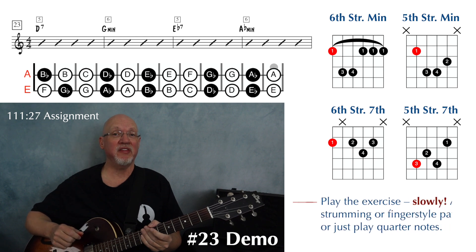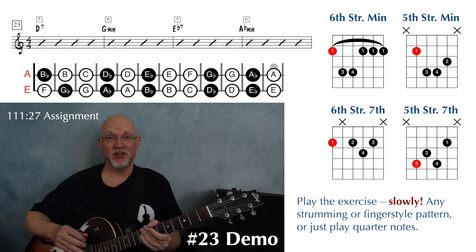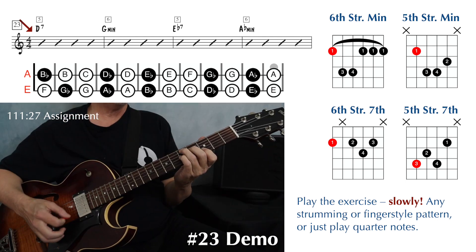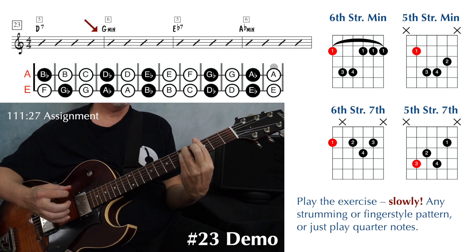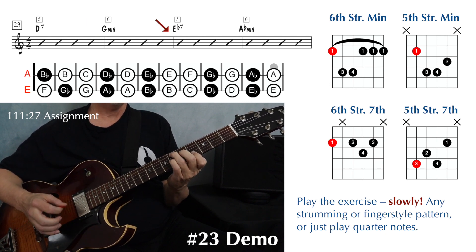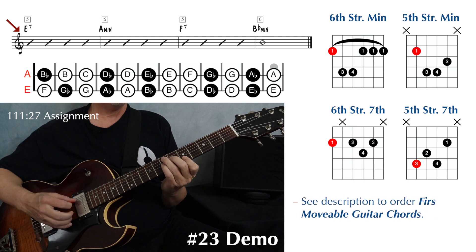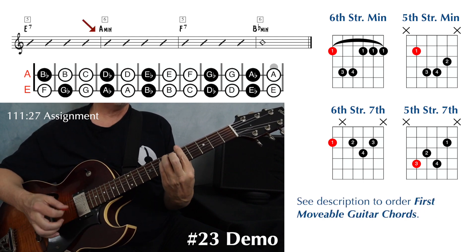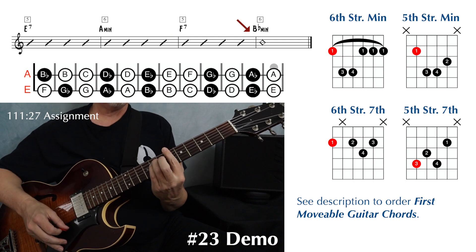Once you can find your chords, go ahead and play the exercise again as slowly as you need to, whatever pattern you like — you can just do quarter notes like I've been doing. D seven. G minor. E flat seven. A flat minor. E seven. A minor. F seven. And B flat minor.